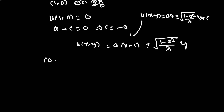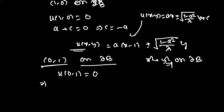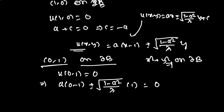The point (0, 1) is also on ∂B since 0² + 1² = 1. So u(0, 1) = 0 as well. Substituting (0, 1): a(0 − 1) ± √((1 − a²)/λ) · 1 = 0, which gives a = ±√((1 − a²)/λ).